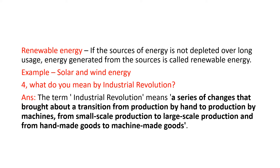Next question: What do you mean by Industrial Revolution? The term Industrial Revolution means a series of changes that brought about a transition from production by hand to production by machines, from small scale production to large scale production, and from handmade goods to machine-made goods.